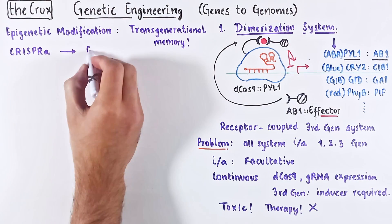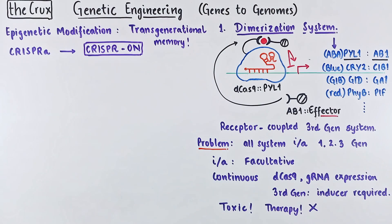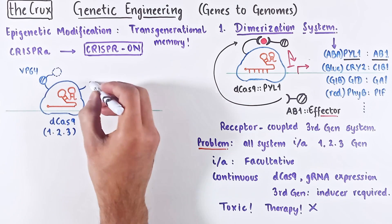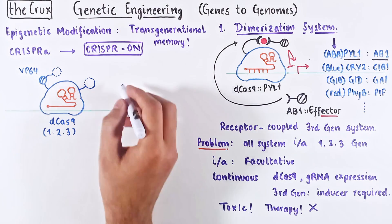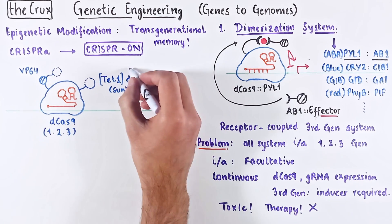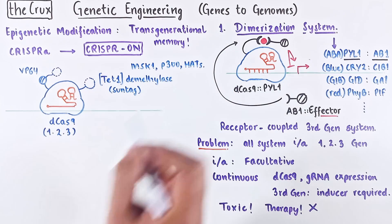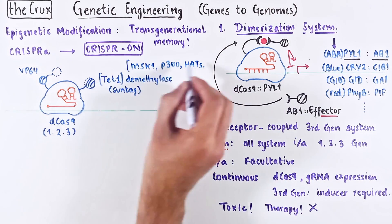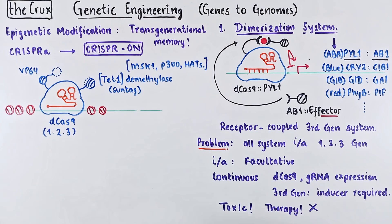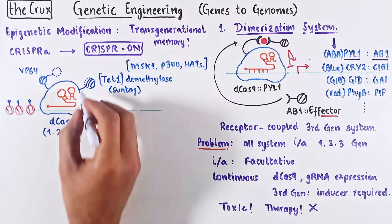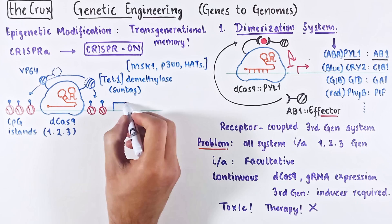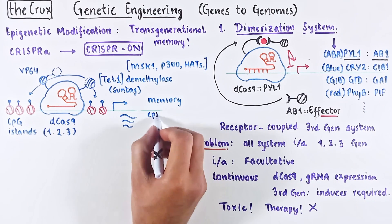For CRISPR-A, we call this the CRISPR-ON strategy. In principle, you take your dCas9 construct from any generation discussed, but now add a TET1 de-methylase — you can do this by fusion via SunTag or something similar. As alternatives to TET1, you can use MSK1, P300, or histone acetyltransferases. These effectors modify the histones around the dCas9 binding site and mark it as constitutive euchromatin. Histones at CpG islands are quite sensitive to these modifications, and this builds a permanent memory that is propagated as the cell divides.